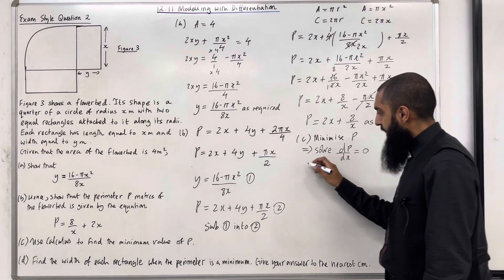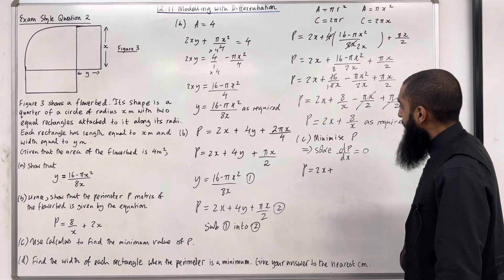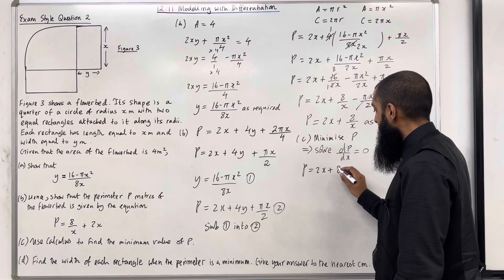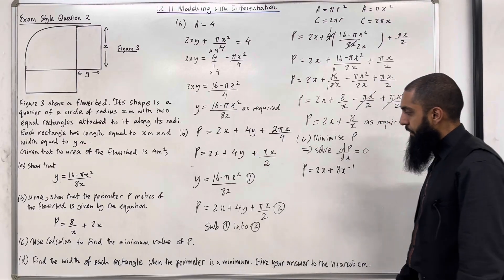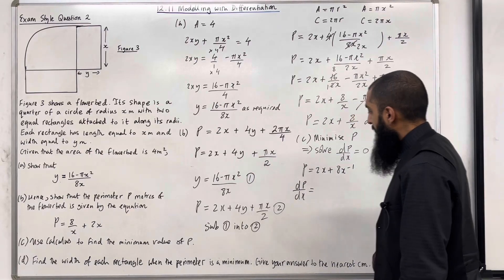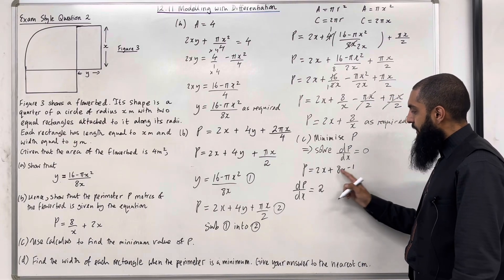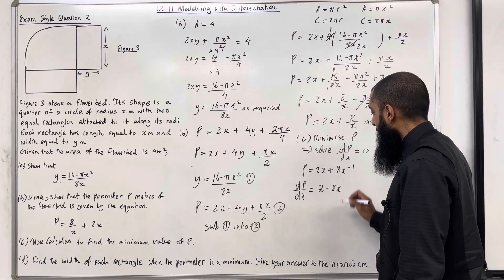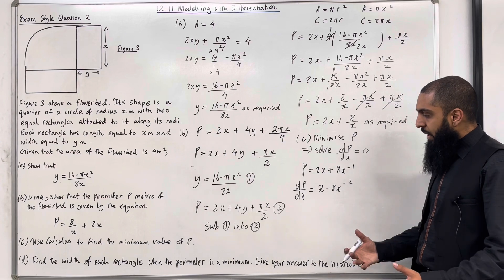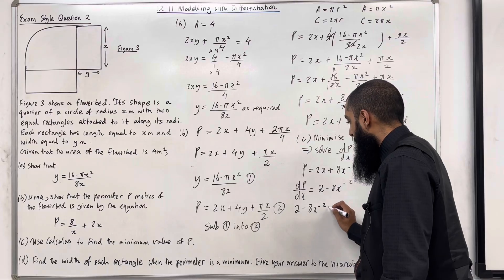Looking at the perimeter equation, we keep the first term 2x as is. Before differentiating the second term 8 over x, we rewrite it using laws of indices as 8x to the power minus 1. So dP over dx equals 2 minus 8x to the power minus 2. Setting this equal to 0: 2 minus 8x to the power minus 2 equals 0.